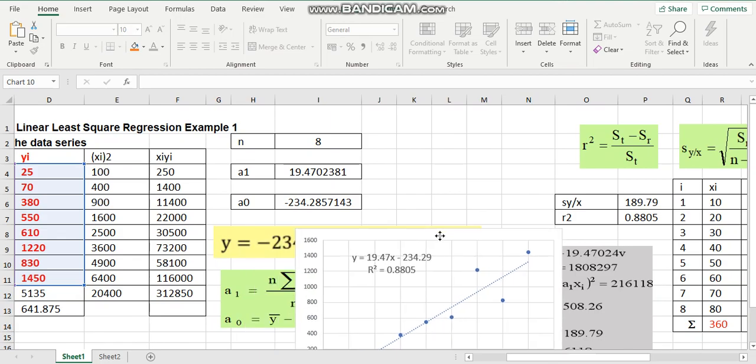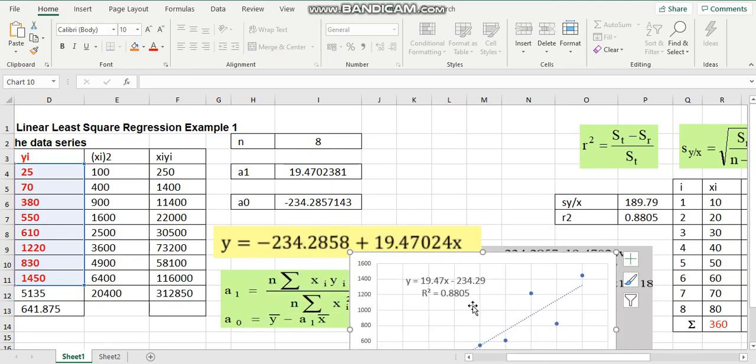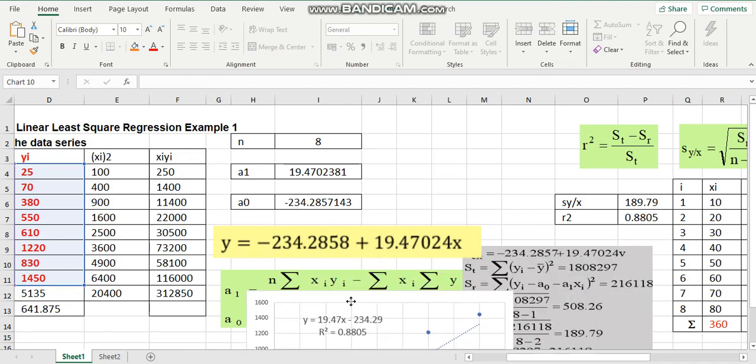So, we double check with the answer that we have got from the Excel. We have done. So, 88.05% of the original uncertainty has been explained by the linear model.